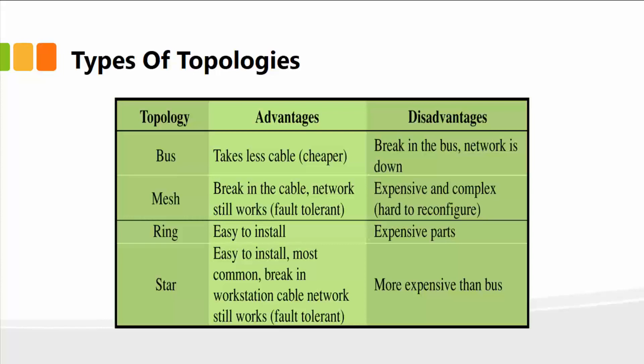Ring topology is easy to install but has expensive parts. The fourth kind of topology is the star topology, very common and the easiest to install — almost all local area networks deploy the star topology. If there's a break in a workstation cable, the network still works and provides fault tolerance. It's a little bit more expensive than the bus topology, but fairly common.